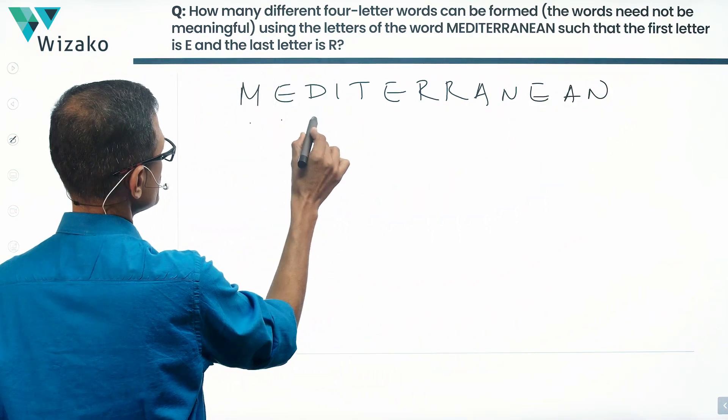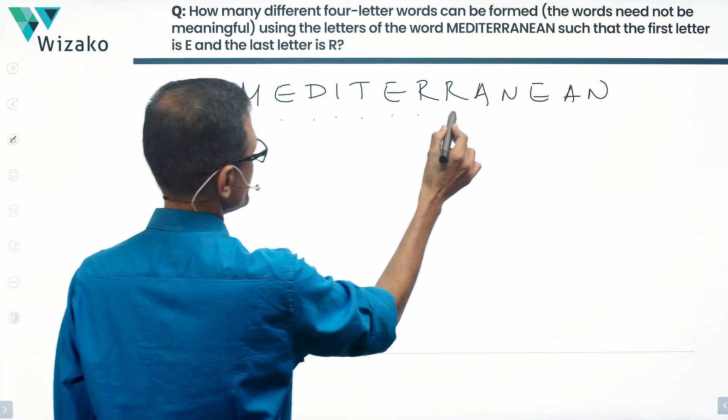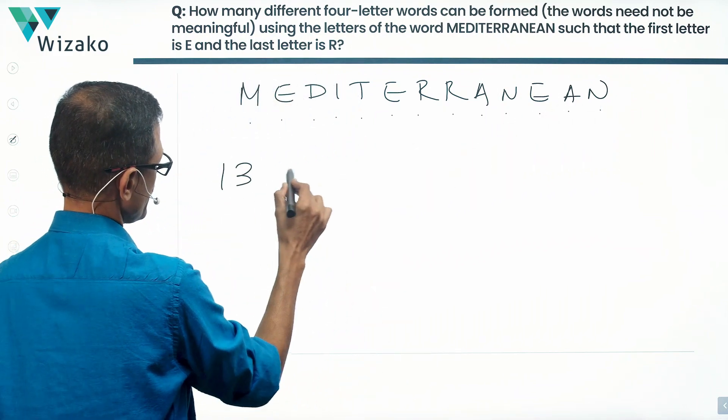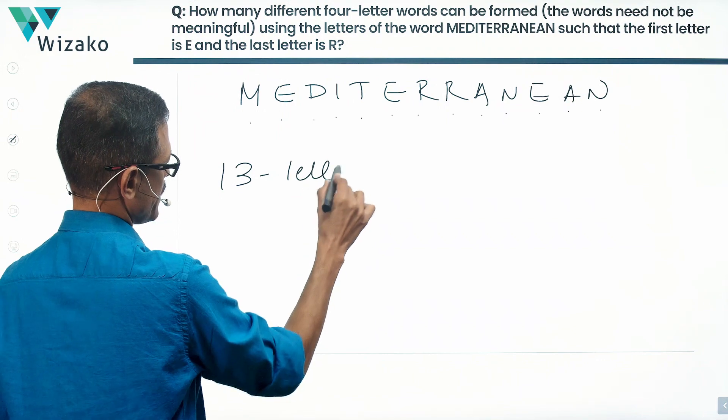Mediterranean. That is 1, 2, 3, 4, 5, 6, 7, 8, 9, 10, 11, 12, 13. It's a 13-letter word. That's what Mediterranean is all about.